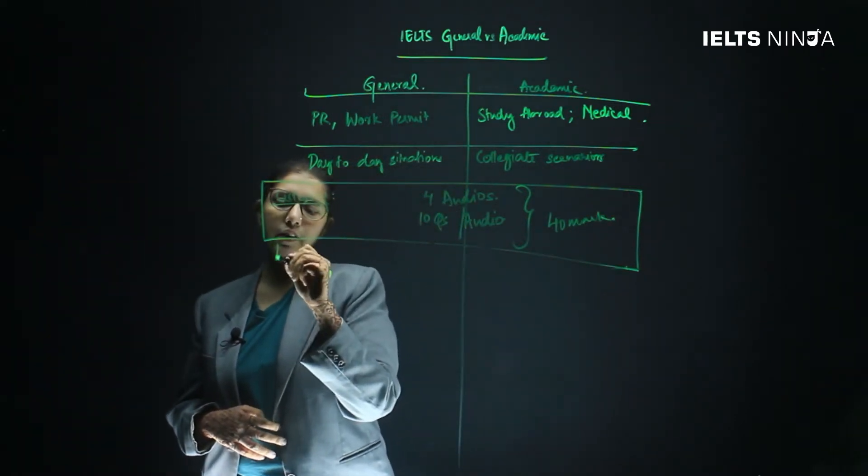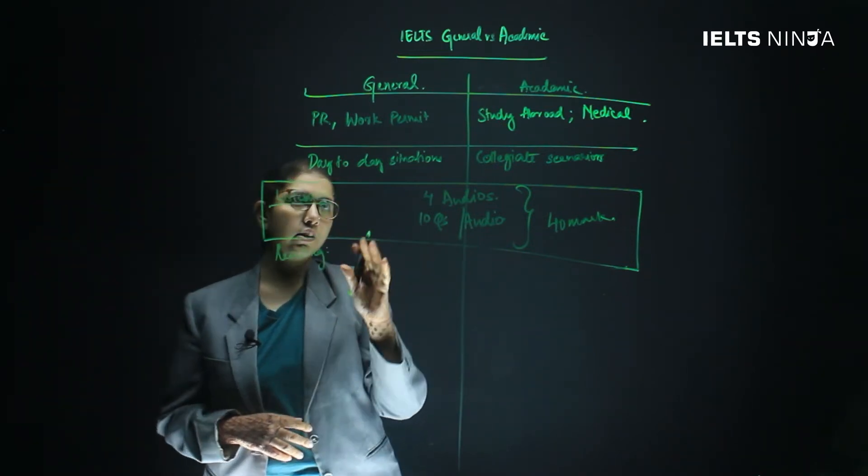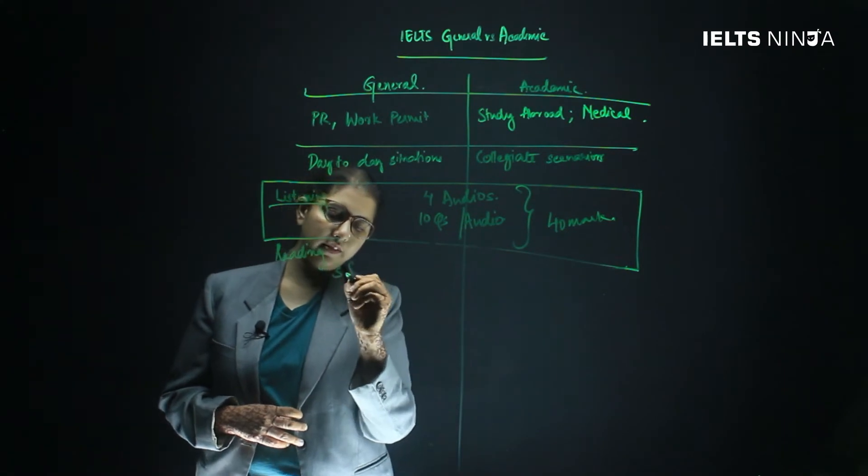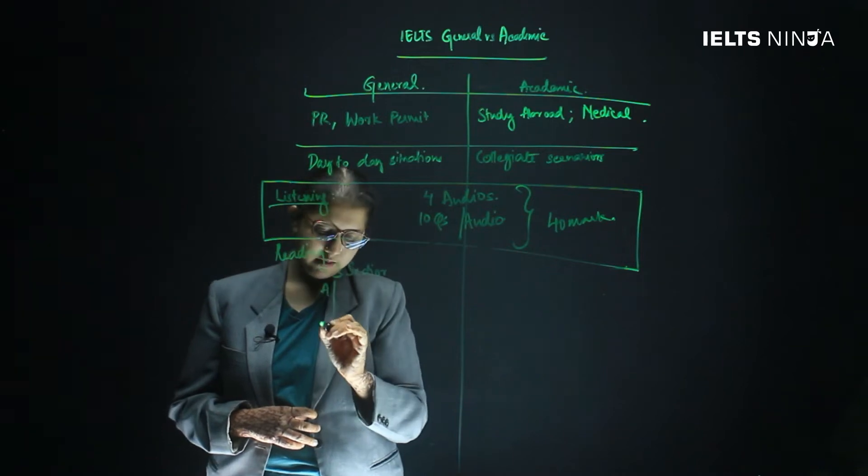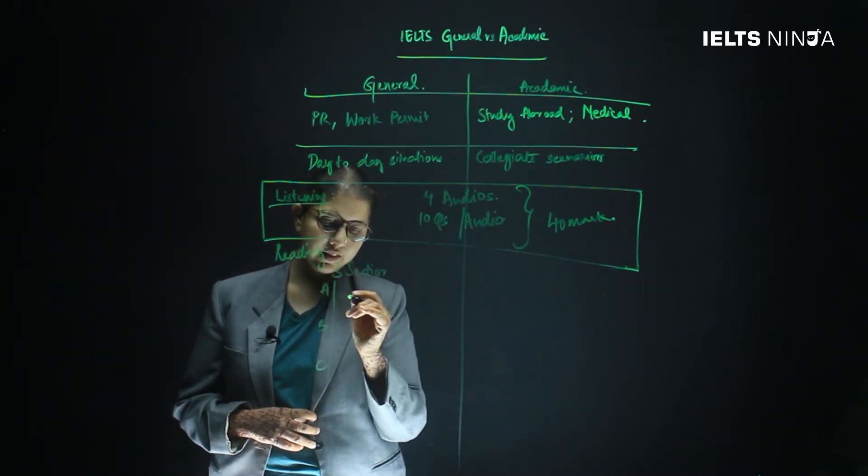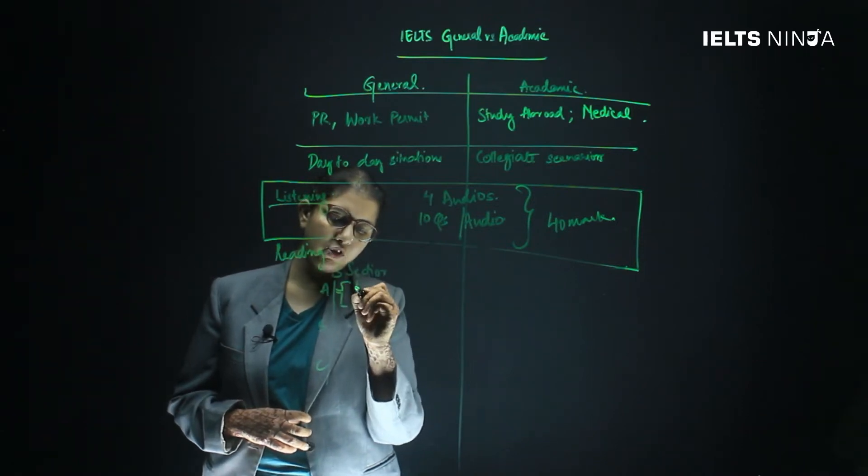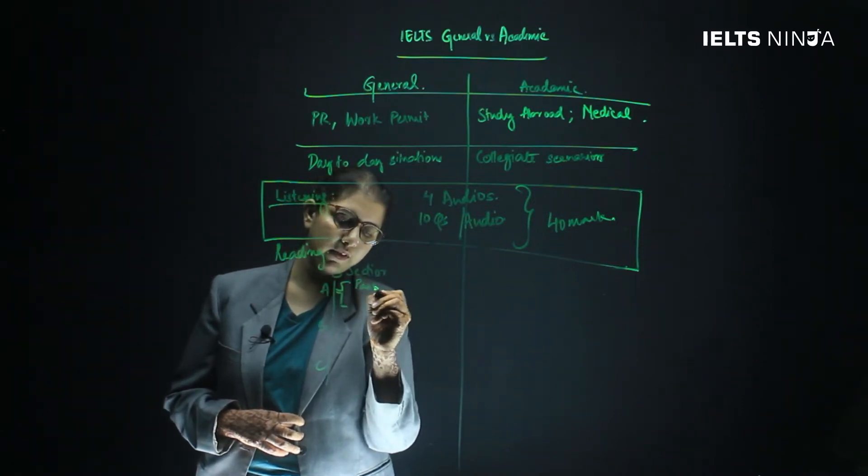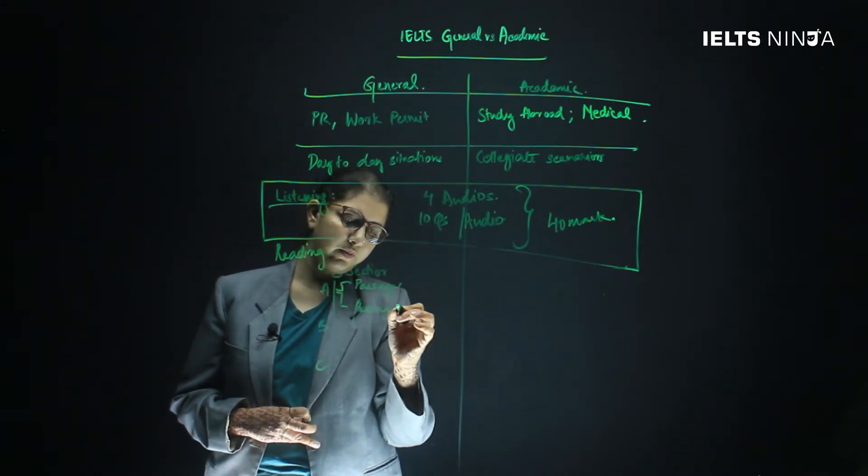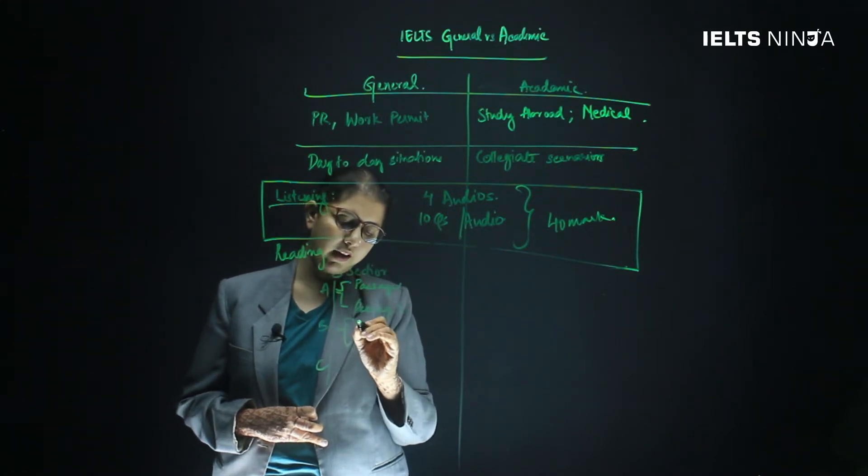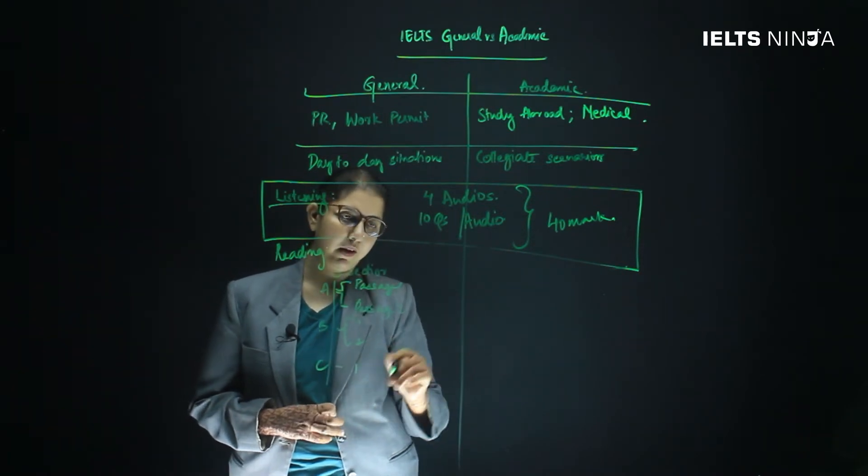Whereas when we come to the reading module, this is where the difference is. In reading general, you have three sections - section A, B, and C. Section A has two passages, a minimum of two passages. Section B also has two passages. Section C has one passage.